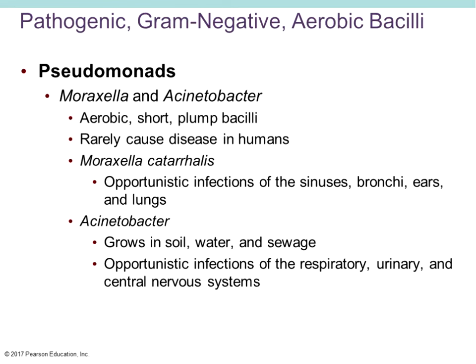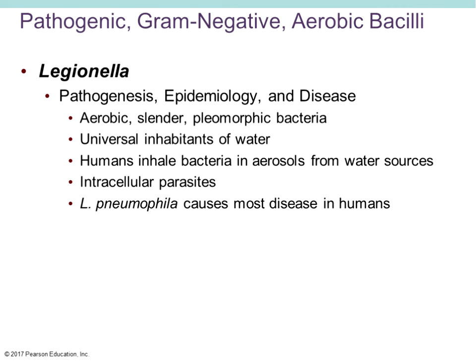Moraxella and Acinetobacter are aerobic, short, plump bacteria. Like Pseudomonas aeruginosa, they rarely cause disease. Moraxella is an opportunistic pathogen that causes infections of the sinuses, bronchi, ears, and lungs. Acinetobacter grows in soil and water sewage and is also an opportunistic pathogen, primarily affecting the respiratory tract, urinary tract, and the central nervous system. Endocarditis and septicemia are also reported in Acinetobacter infections. Like Pseudomonas aeruginosa, it can be resistant to many antimicrobial drugs, so susceptibility testing is needed to determine the most effective treatment.